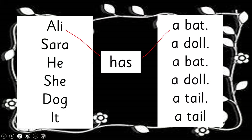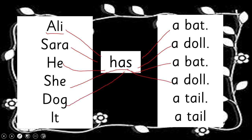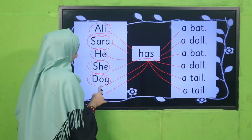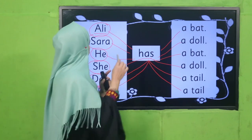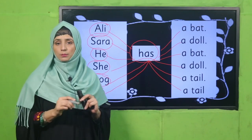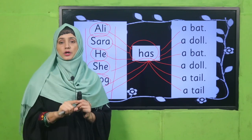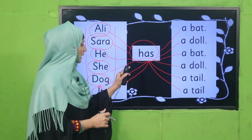'Ali has a bat.' Ali is singular. 'Sarah has a doll.' 'He has a bat.' 'She has a doll.' 'Dog has a tail.' 'It has a tail.' Ali and Sarah are naming words. 'He' is a substitution word for Ali, 'she' for Sarah, and 'it' for dog. We have used 'has' with all of them because these naming words and substitution words are all singular — we are talking about one person or one thing.